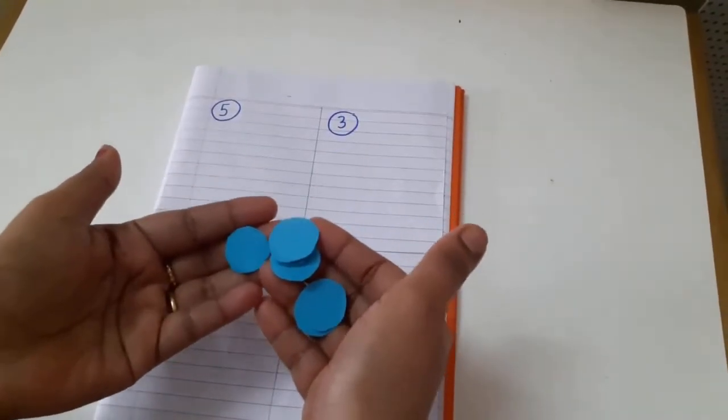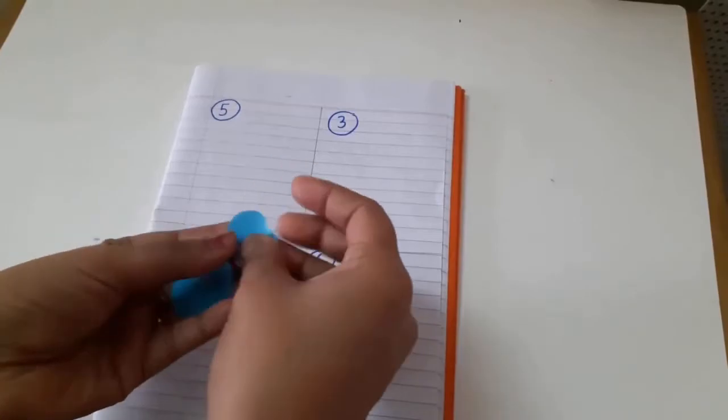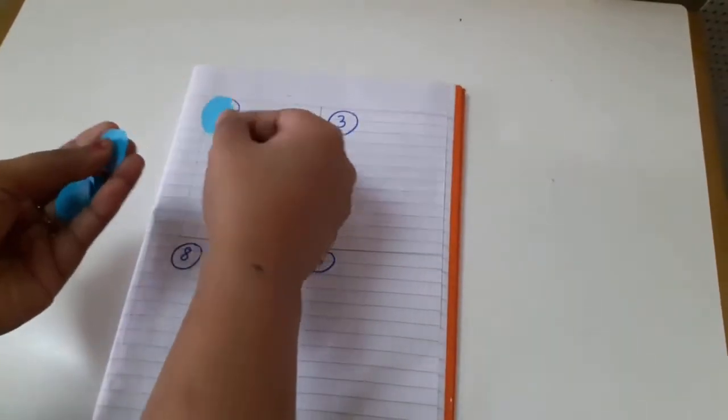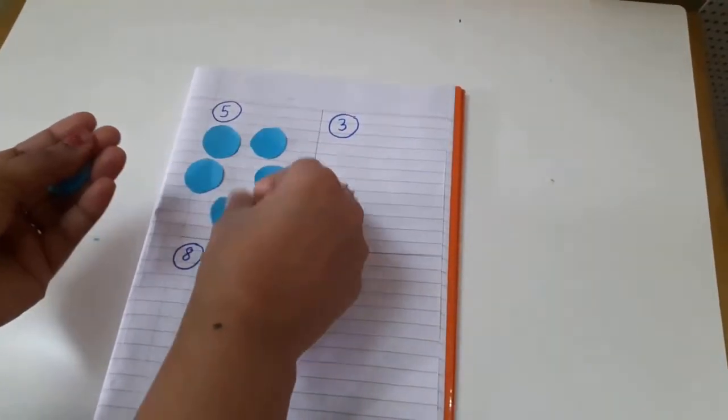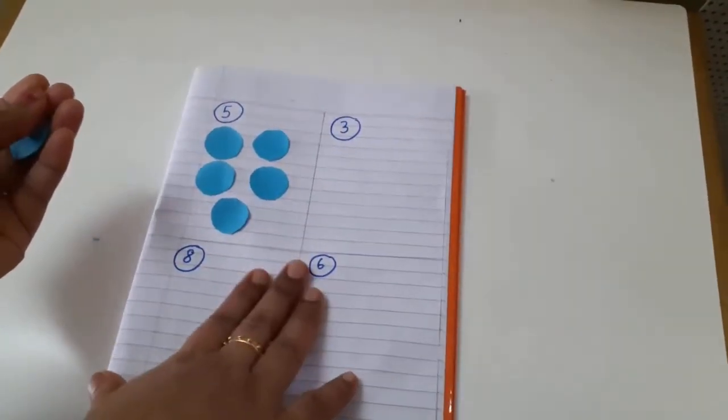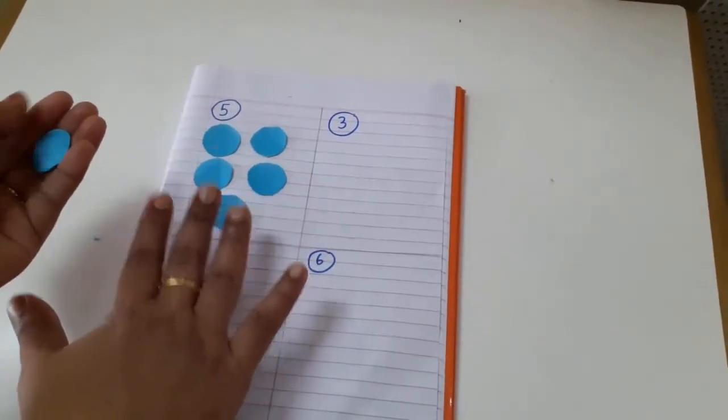This is very easy to make. What they have to do is if it's number 5, they'll stick 1, 2, 3, 4, and 5 like this. You can tell them to just place it also, but then they'll have more fun if you give something to stick on.